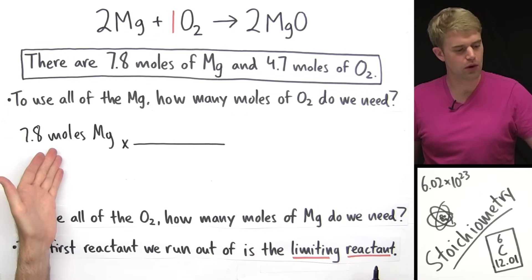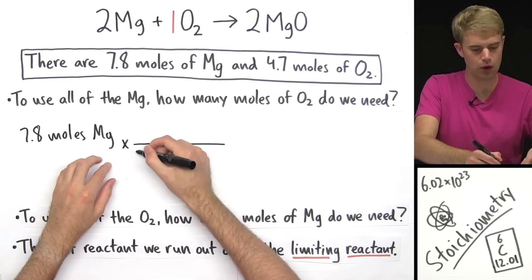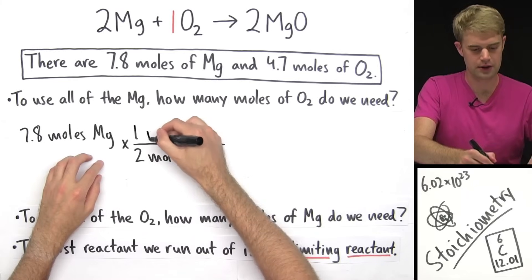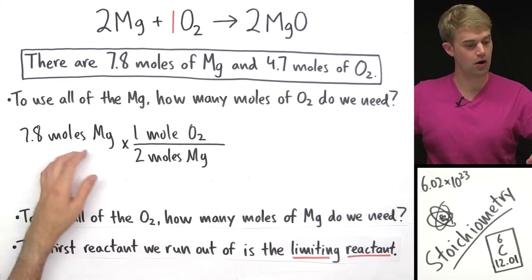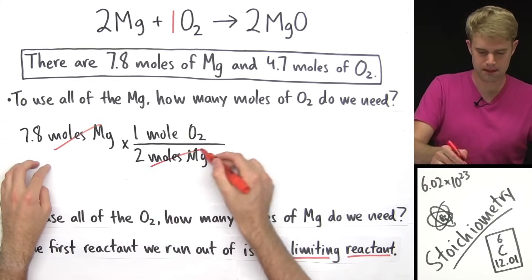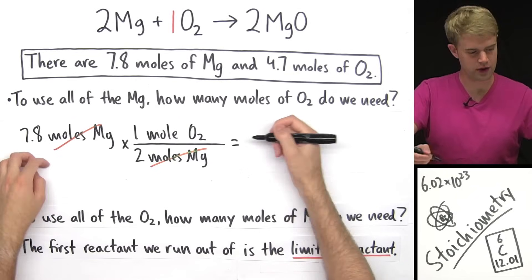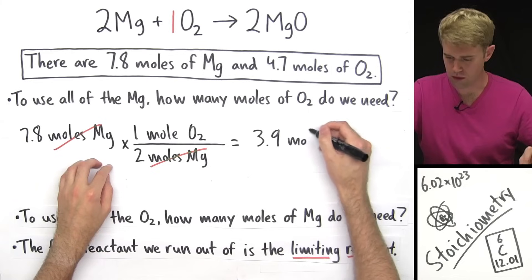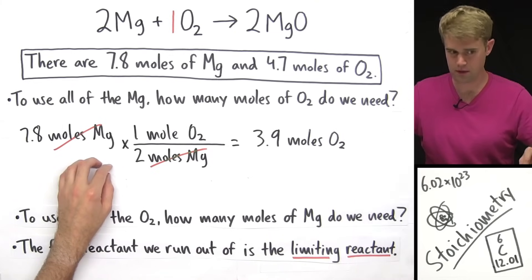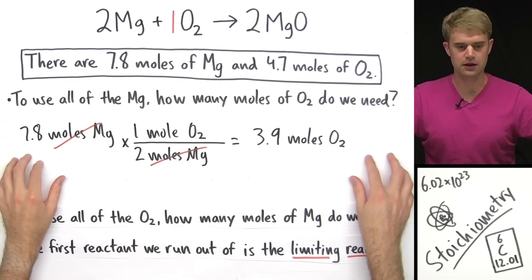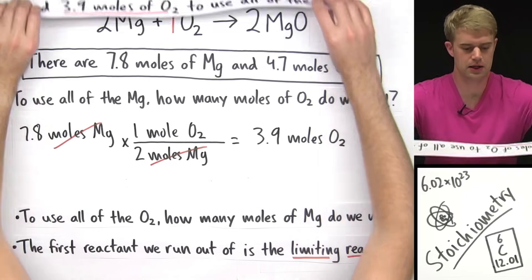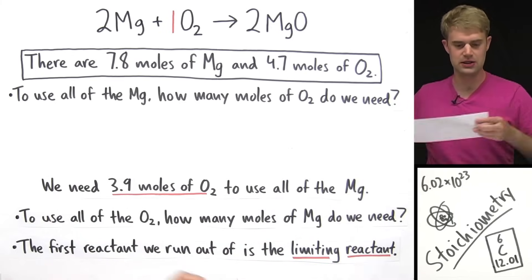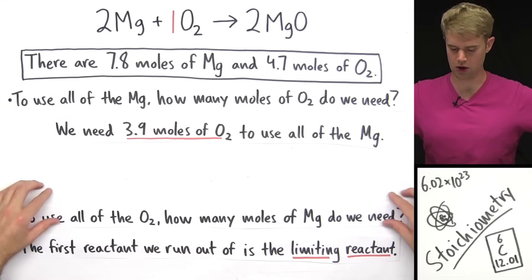I want to get rid of moles of Magnesium, so I put moles of Magnesium on the bottom — 2 moles of Magnesium — and 1 mole of Oxygen on the top. Moles of Magnesium on the top and moles of Magnesium on the bottom cancel out, and the math — 7.8 times 1 divided by 2 — gives me 3.9 moles of Oxygen. This tells us that we need 3.9 moles of Oxygen to use all of the Magnesium.